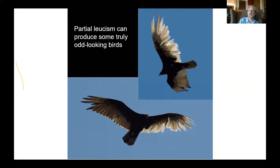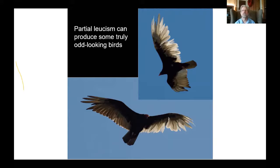A bird with white in its plumage isn't necessarily an albino — it may be leucistic, and partial leucism can produce some really odd birds. Like this turkey vulture that was hanging around in southern Ohio for a couple of years. The flight feathers on one wing were leucistic so it looked really strange. The leucistic feathers are not as strong as normal ones and wear away more rapidly, so that side of the bird had wing feathers that looked much more ragged.